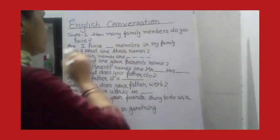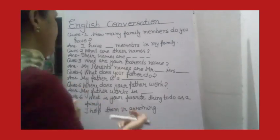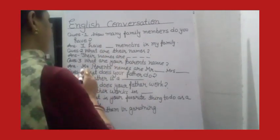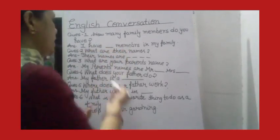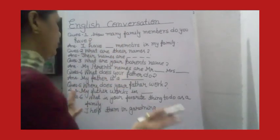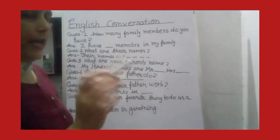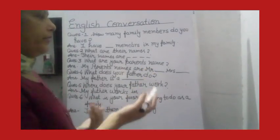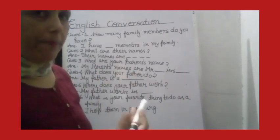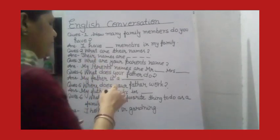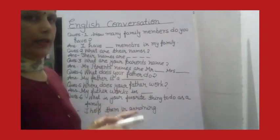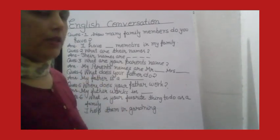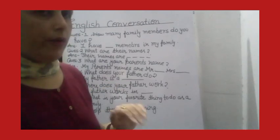Question 1: How many family members do you have? — I have 6, 7, 8, 9 members in my family, whatever. Question 2: What are their names? — Their names are... [tell their names]. Question 3: What are your parents' names? — My parents' names are Mr. [father] and Mrs. [mother]. Question 4: What does your father do? — My father is a businessman, serviceman, banker, army man, or army officer, whatever applies.